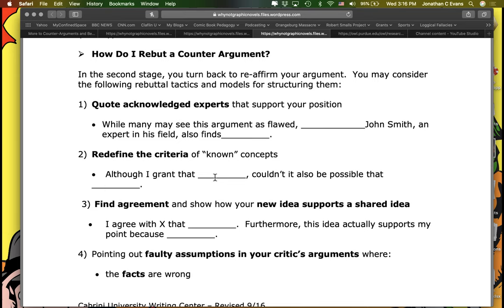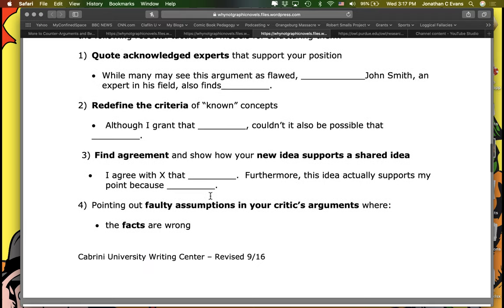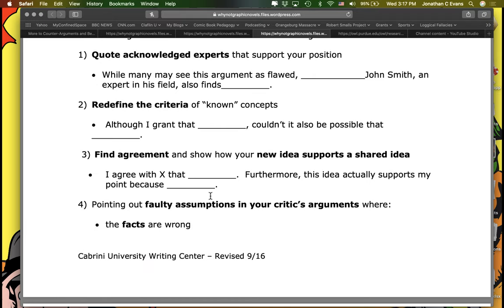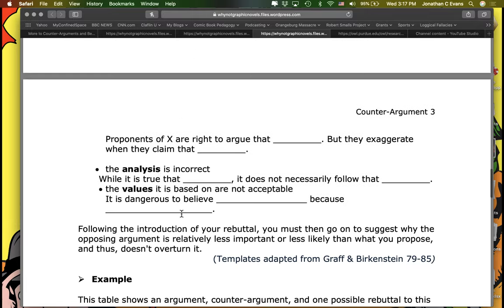So this is the idea that you can bring in your own source material to then refine and point back. This is also, by the way, something you can do. You can bring in more source material. Redefine the criteria of known concepts. Find agreement. This is the idea that you can concede some ground. It doesn't mean necessarily you have to become 100% against them. But you can give a little ground and say, I can accept what they're saying up to this point. But here is where what I'm talking about really focuses. Try your hand at it. Pointing out faulty assumptions. They give some examples here.